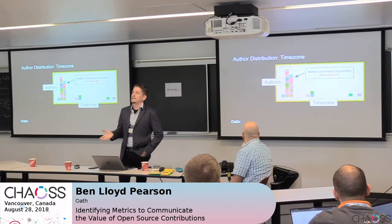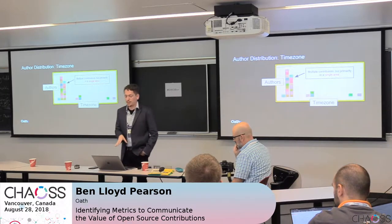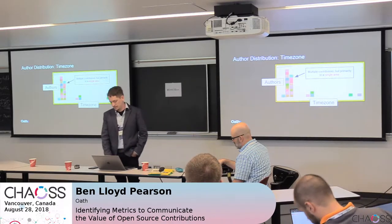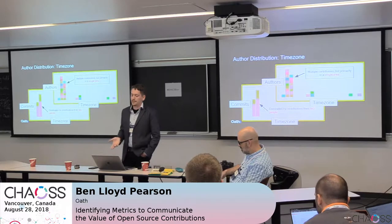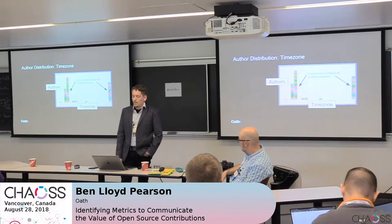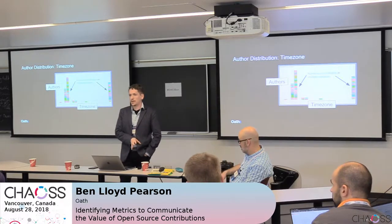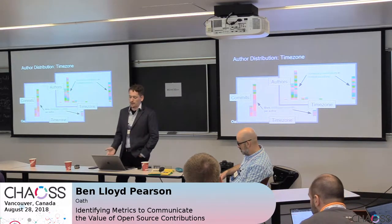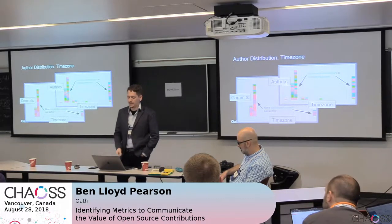When you look at this distributed over time zones — the number of authors per time zone — for Project Yellow there are multiple contributors, but they're primarily in a single area, which just happens to be the West Coast where our office is. And the commits per time zone confirm they're coming primarily from there. Project Purple, on the other hand, has numerous contributors in multiple locations. Not only do we have a lot on the West Coast, but there's a company in Japan that actually contributes quite a bit to this project as well, and that's also reflected in the commits per time zone — a much greater diversity of people making commits as a whole.